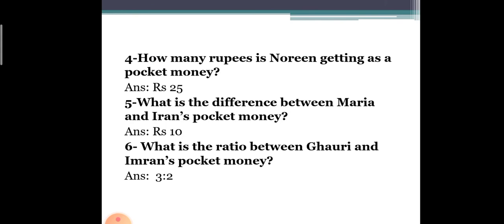What is the difference between Maria and Imran's pocket money? Maria's pocket money is 10 rupees and Imran's is 20 rupees, so the difference is 20 minus 10, which is 10 rupees.